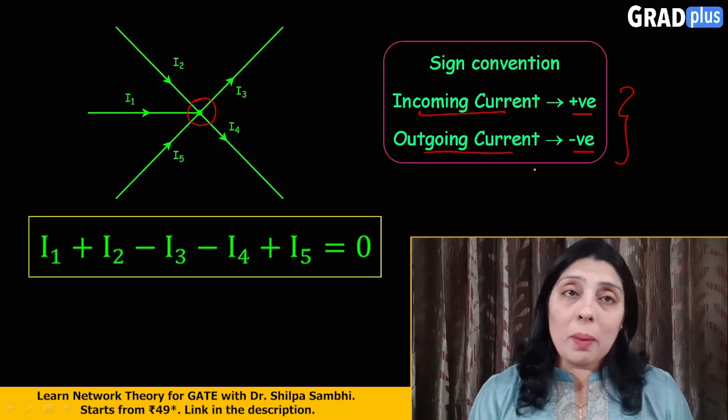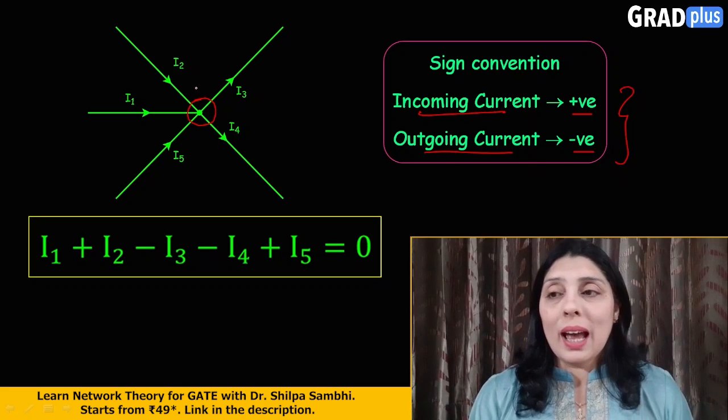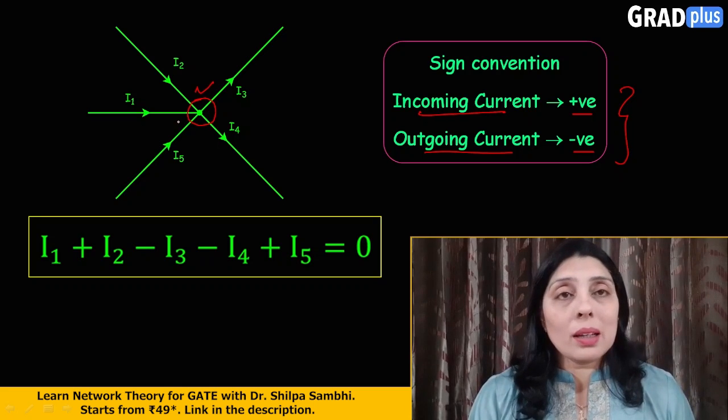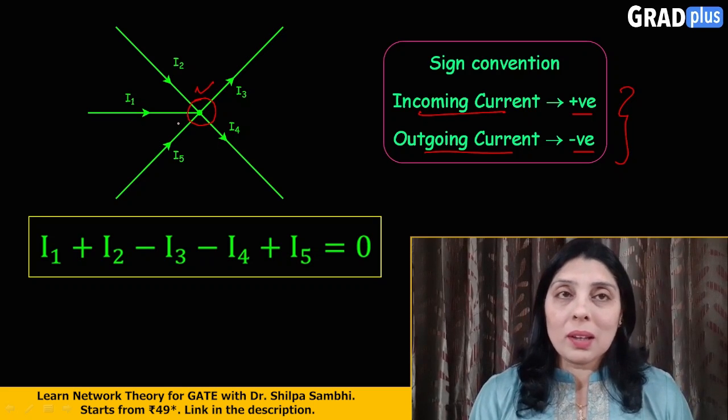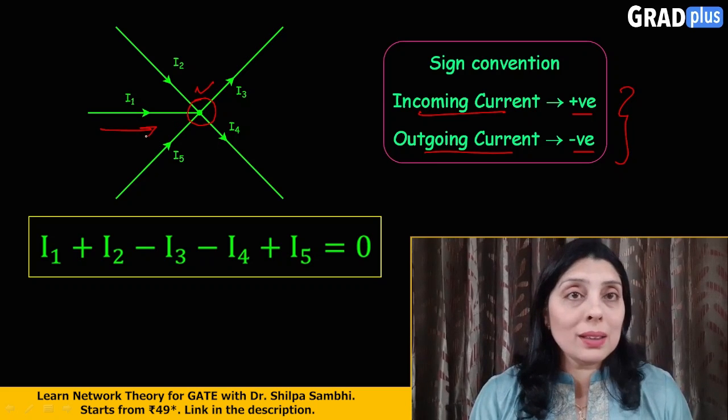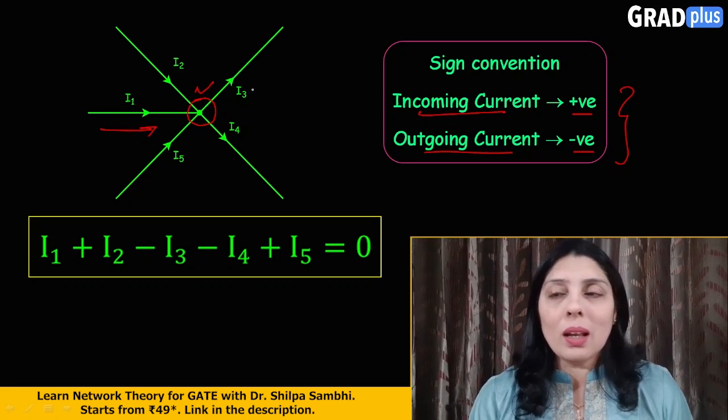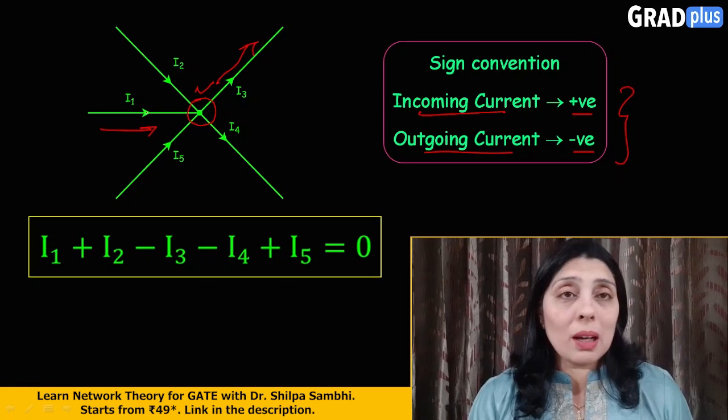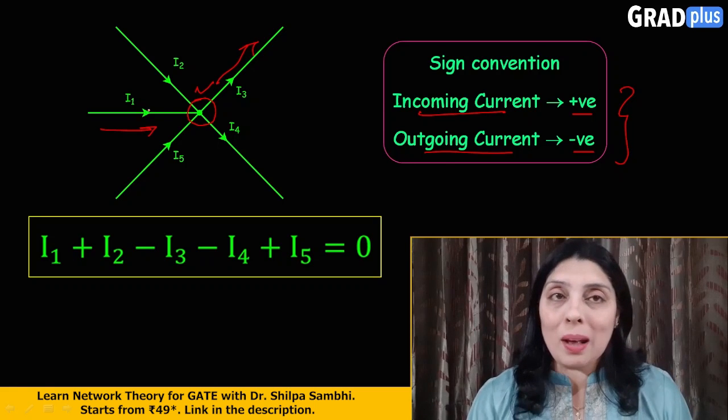Now what will happen if I apply this node analysis at this junction, at this node? So my incoming current has to be taken as positive. Incoming current means the current which is flowing towards the node and what is outgoing, the current which is moving away from the node. Okay, so what you observe here there are three incoming currents I1, I2 and I5.